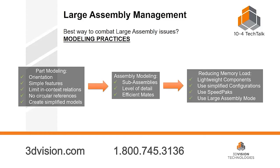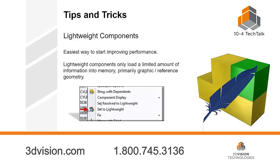In the assembly, use sub-assemblies as much as possible. Have an appropriate level of detail — you don't want to be able to zoom in and see nuts and bolts on a huge factory plant assembly. Also use efficient mates: don't make something parallel and then put a distance mate between those parallel faces — the distance mate will take care of it. Most part files in an assembly only need three mates to be fully defined, so if you've got seven or eight you're probably doing things out of order. After all that, you can reduce your memory load by using lightweight components, simplified configurations, speed packs when necessary, and always using large assembly mode.